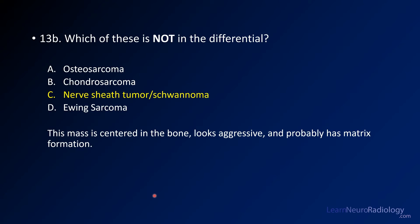The question here is which of these is not in the differential. Even without seeing the case, as I pointed out, the one that does not fit is a nerve sheath tumor or schwannoma. These are relatively benign lesions with non-aggressive features. This lesion looks like it's coming from the bone, is aggressive, and has matrix formation — unusual for a schwannoma. The remainder of the lesions in the differential can definitely show those features. This ended up being osteosarcoma, though you would give a differential rather than reliably reaching that conclusion every time. What you need to communicate is that it's an aggressive osseous lesion.